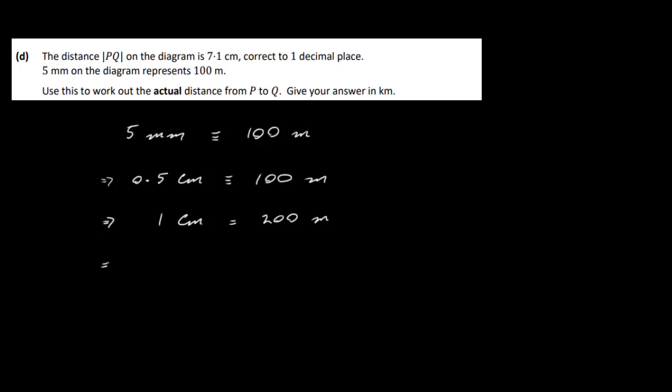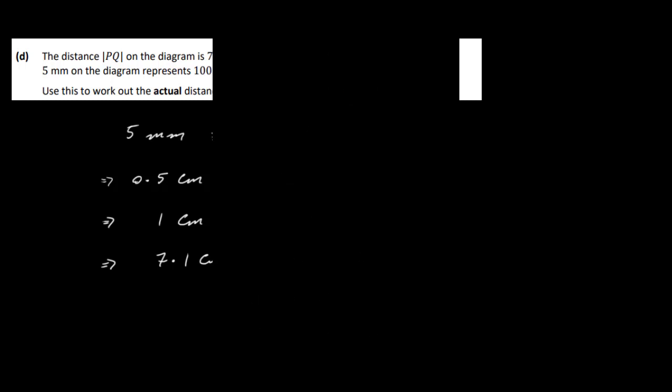We actually want 7.1 cm, so that's going to be equivalent to 200 multiplied by 7.1 meters. Let me do that on my calculator: 200 times 7.1, that'll give me 1420 meters. That's our answer, but let's read it again. We've got to give it in kilometers. So let's convert this to kilometers. There are 1,000 meters in a kilometer, so that would be 1.42 kilometers. And that's it for this question: 1.42 kilometers.